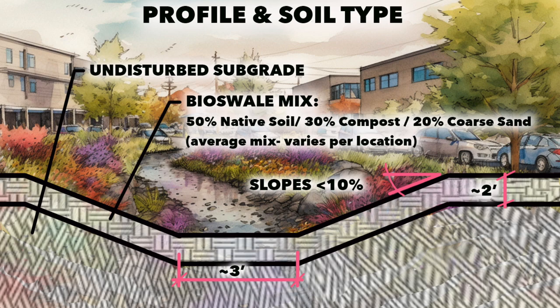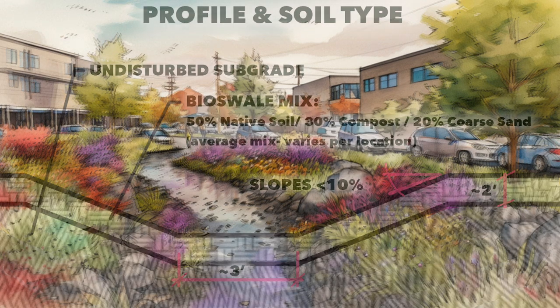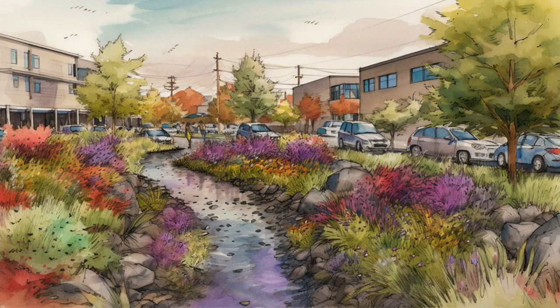The sides of the bioswale should be about 10% slope or less. Anything steeper is a little bit harder to maintain and you do start to have problems with erosion. But you can address the slope issue by adding some rocks or a mixture of shrubs and other plants staggered in strategic locations to help control the slope and slow down sheet flow from the hardscape surfaces.